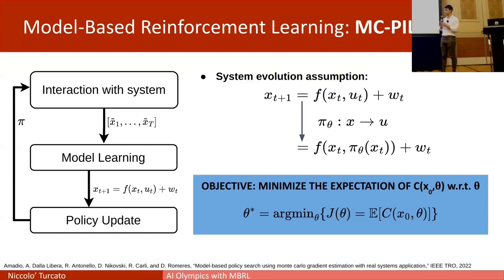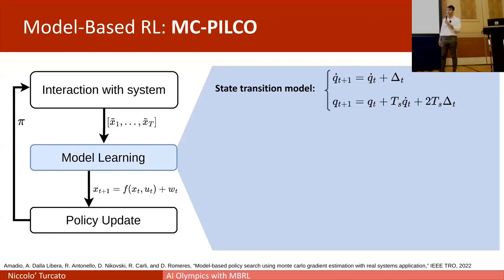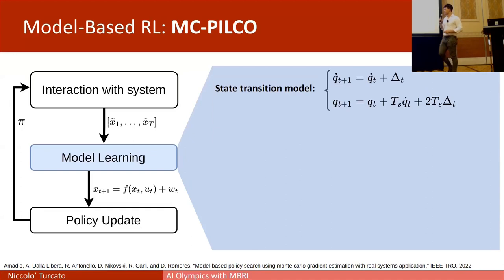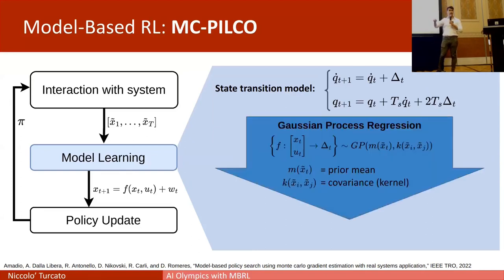In the model learning phase, we exploit a simple state transition model which encodes the evolution of the system state in terms of joint velocities and positions as functions of the delta in velocity — quantities proportional to the acceleration of the system. The model learning phase uses Gaussian process regression to learn these velocity deltas directly from data.